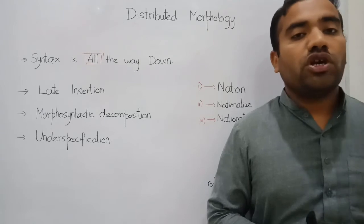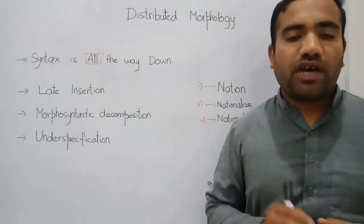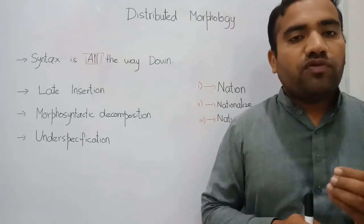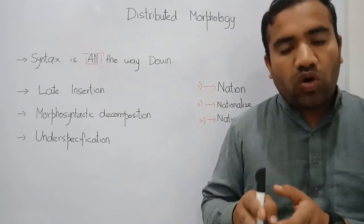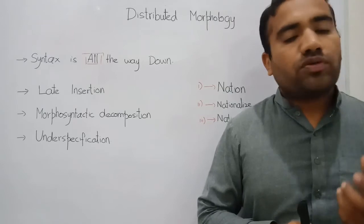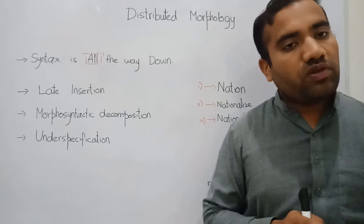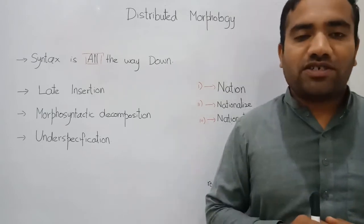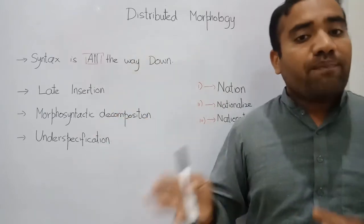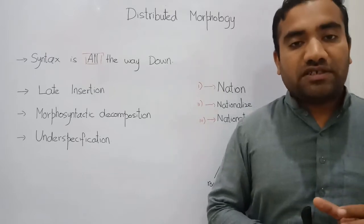If you want to know what distributed morphology is, you must know what are the cores of distributed morphology. The core claim is that distributed morphology states that syntax is all the way down. This means that when we want to generate a sentence, we have systematic operations — that is syntax. Distributed morphology states that the same syntax applying at the sentence level will also be applied at the word level.